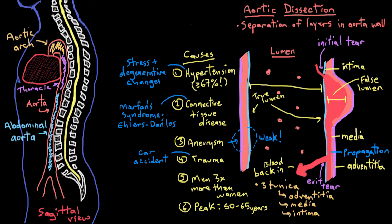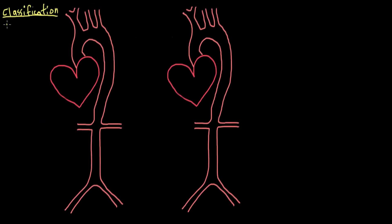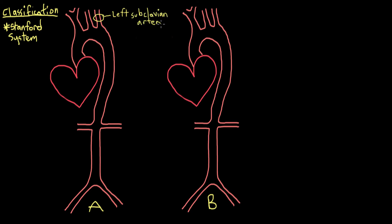There are two major ways to classify aortic dissections: the Stanford system and the DeBakey system. But we'll just look at the Stanford system here. It's important to find out what classification a dissection falls into, because they have implications for treatment. There are two major types under the Stanford system: type A and type B. Type A dissections involve any part of the aorta before the origin of the left subclavian artery, meaning a type A dissection can start anywhere along that part of the aorta. Type A dissections usually require surgery, while type B dissections — involving the descending thoracic aorta after the left subclavian artery origin — are usually treated medically, without surgery.